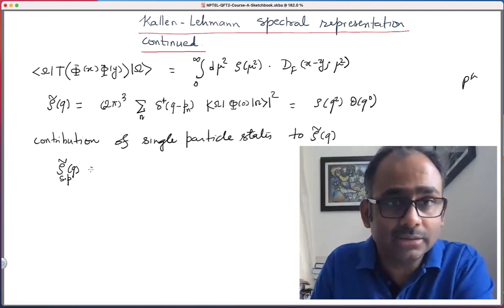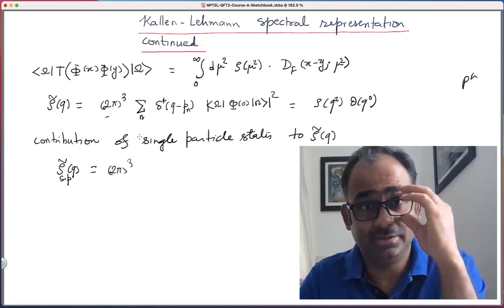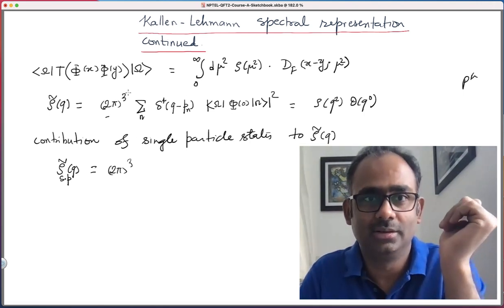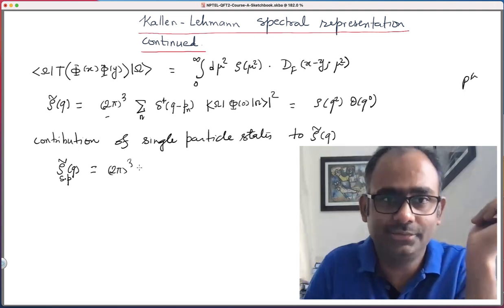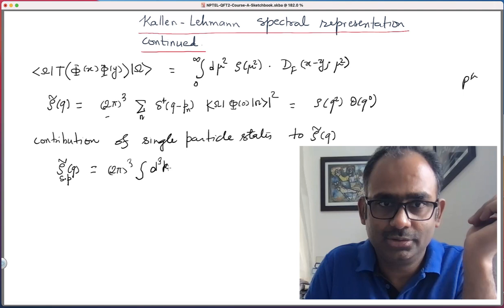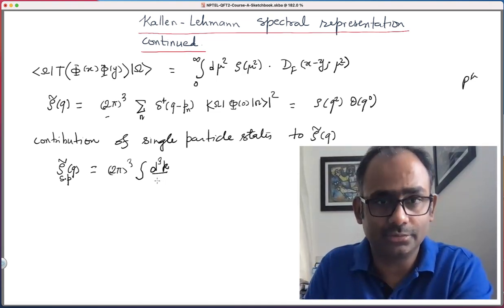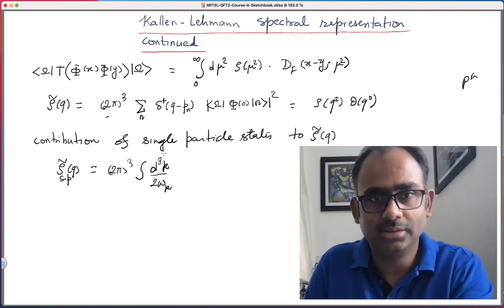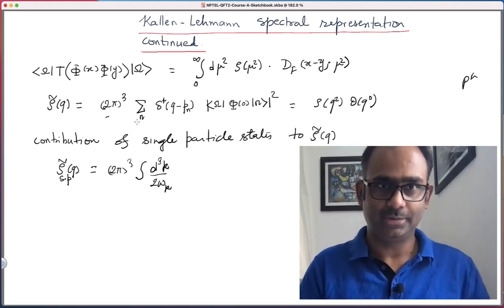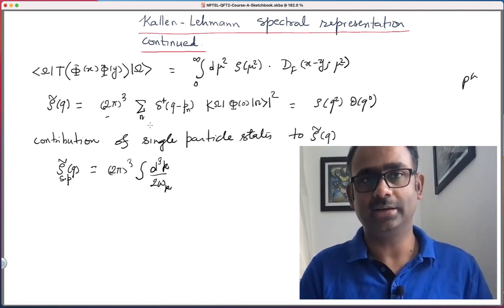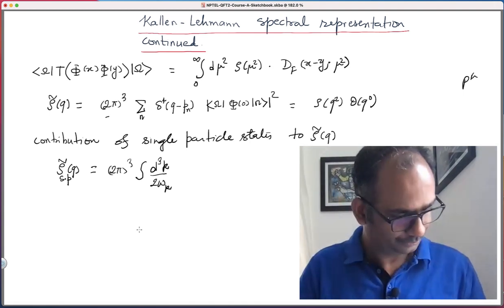That object is 2 pi cube, so that 2 pi cube factor here, then summation over n, but now we are going to appropriately replace this sigma over n by the measure that you have, which we have discussed earlier, is d cube k over 2 pi cube. I hope that is correct. No that is not correct. No factor of 2 pi cube, we had just 2 omega k. Remember we had long back discussed that this is the appropriate measure for single particle states, because the label n is not discrete, it is continuous. The single particle states have continuous momenta, so you have an integral, and this is what gives you the correct measure.